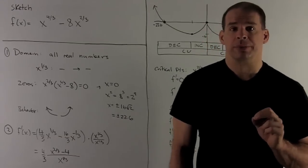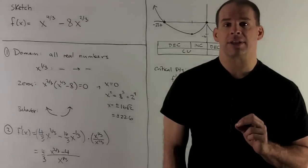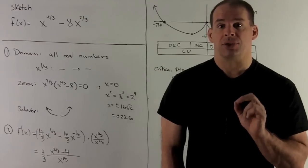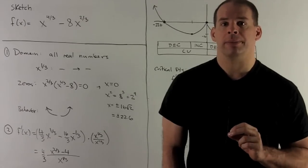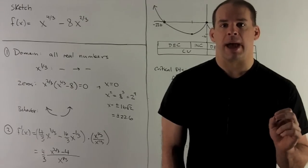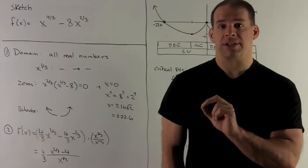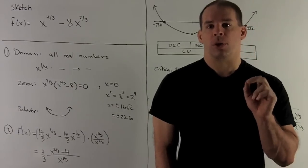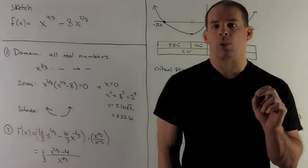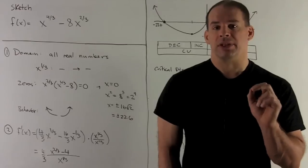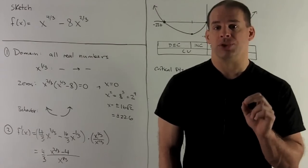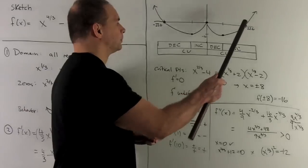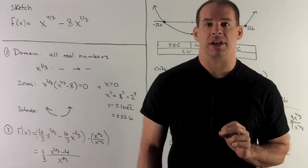Next, we look for zeros. We factor out x^(2/3), giving x^(2/3) times (x^(2/3) - 8). The x^(2/3) factor gives a zero at x = 0. Solving x^(2/3) - 8 = 0: push 8 to the other side, cube both sides, leaving x² = 2^9. That won't square root cleanly, so we get approximate zeros at x ≈ ±22.6. We mark all zeros on the graph.